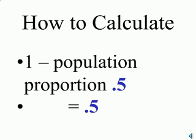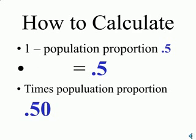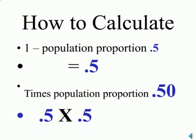So let's use our example. We had a population proportion of 0.5. So we're going to start off going 1 minus that population proportion of 0.5 equals 0.5. And then we're going to multiply that times the population proportion of 0.5 and we're going to get a product of 0.25.